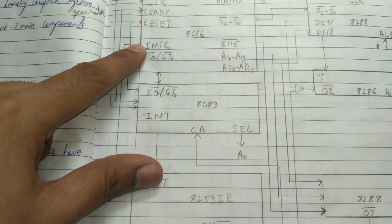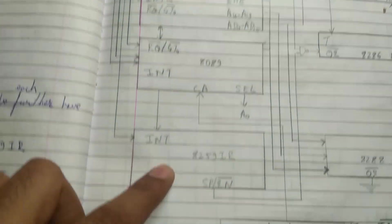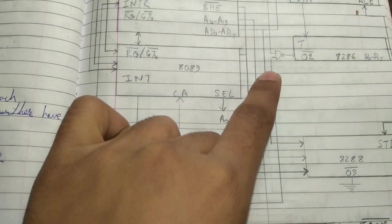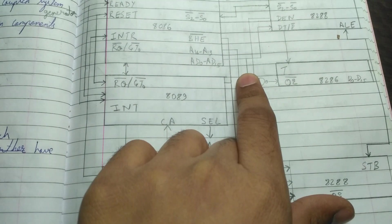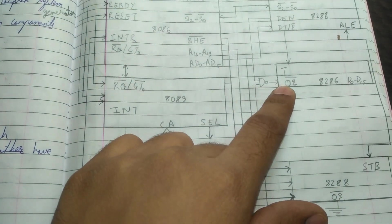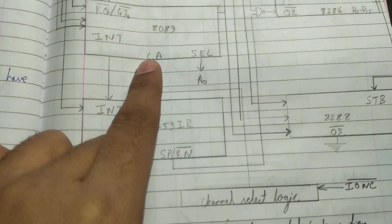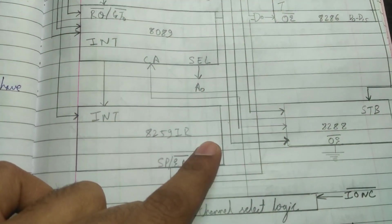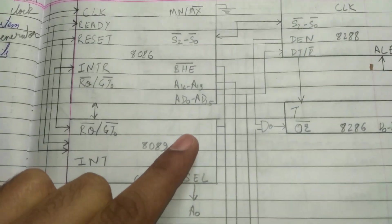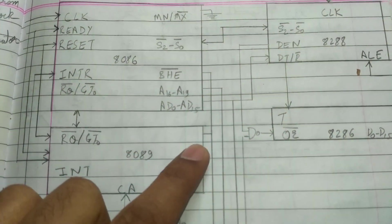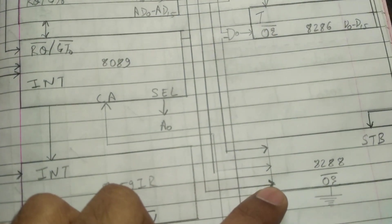The INTR of the 8086 is connected with the INT of the 8259, and the SP slash EN bar is connected with the NAND gate. The DEN is also connected with the NAND gate, and it is connected to the OE bar. The channel select logic is connected with CA, and SEL is connected with the A0 pin. BHE bar is connected to the 8282 as well.